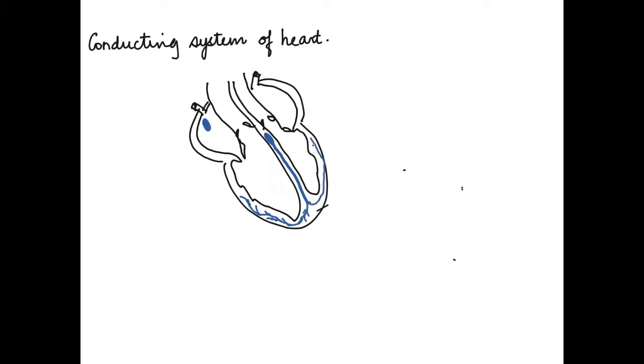The sinoatrial node is a nodal tissue that helps to generate the electric impulses. The electric impulses that are generated in the sinoatrial node or SAN are then passed along the cells of the auricles.